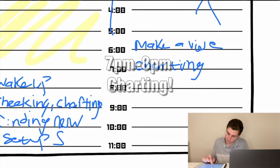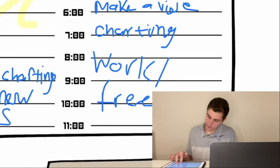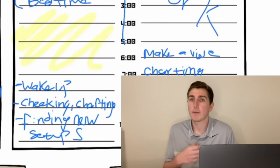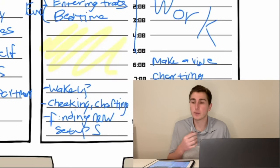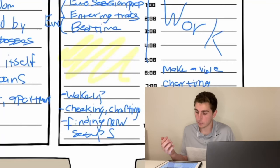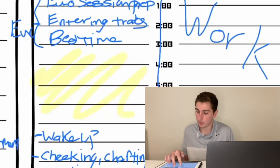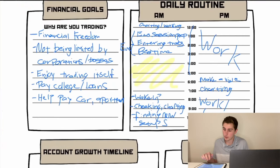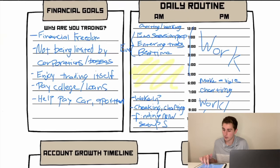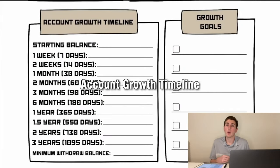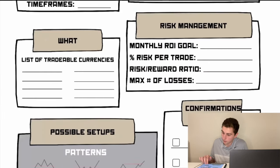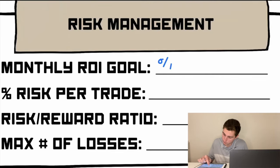Around 6pm I'll be charting and maybe making a video, then the rest is free time. This schedule is probably much different than yours — you might have a job, kids, family. You might not have the euro session time I have, or you might be asleep by 10pm, so just tweak this daily routine to fit your life. Next up we have our account growth timeline, which is super important for helping find your overall monthly return — for me that's usually around 20% per month.